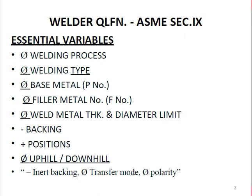For ASME Section 9 welder qualification, we need to check the essential variables. The essential variables for welder qualification — not procedure qualification — include: welding process, welding type, base metal P-number, filler metal F-number, weld metal thickness, diameter limits, backing, position, and uphill/downhill progression.